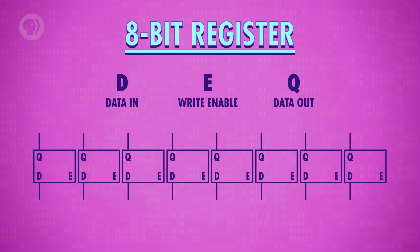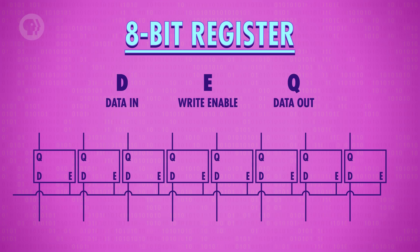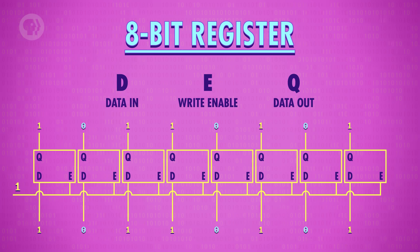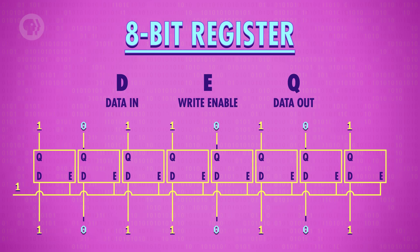To write to our register, we first have to enable all of the latches. We can do this with a single wire that connects to all of their enable inputs, which we set to 1. We then send our data in using the 8 data wires, and then set the enable back to 0. And the 8-bit value is now saved in memory.